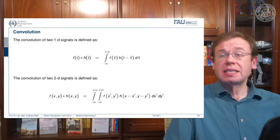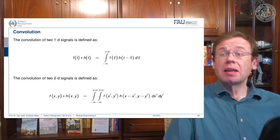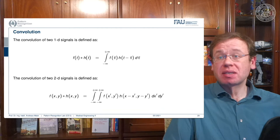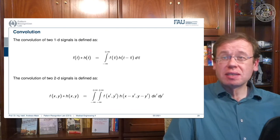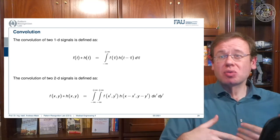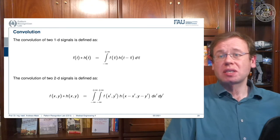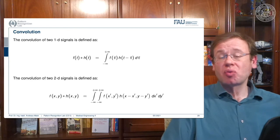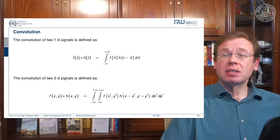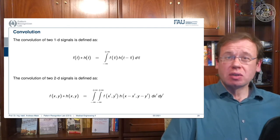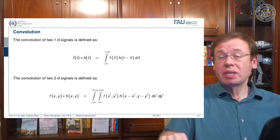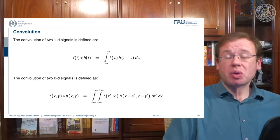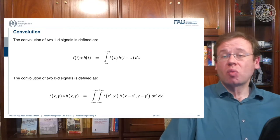The convolution is an integration from minus infinity to plus infinity and a point-wise multiplication of the two functions. I shift one of the two functions by some variable tau and then add the two up. So the convolution is essentially shifting two functions alongside each other, then we multiply the two and add them up. This is also defined in 2D space with a double integration over two variables, and the 2D version will become very important when talking about imaging systems. For now we're only talking about 1D signals.